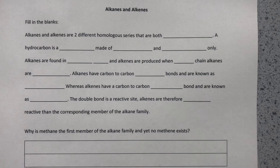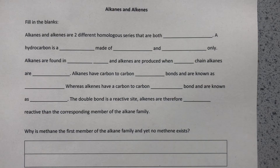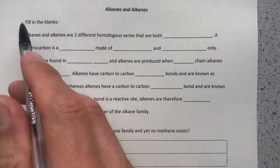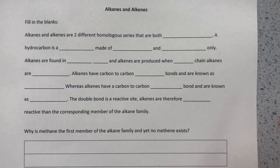We'll talk briefly in this video about alkanes and alkenes. If you are a triple scientist, you definitely need to know all of this. If you're a double scientist, you need to know that alkanes are found in crude oil, and alkenes are one of the products of cracking. You do need to know a tiny bit about alkenes, but not a huge amount. Probably for the double scientist, this first paragraph is enough.